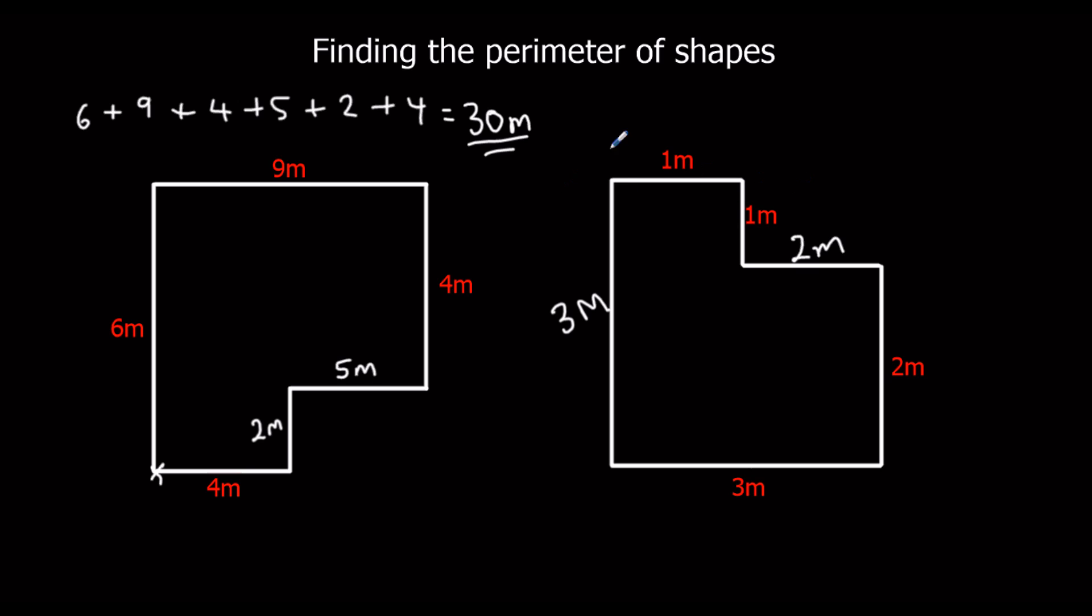Now we've got every length, so we just have to add them up. So I'm going to start there and go around the edge. So it's 1 plus 1 plus 2 plus 2 plus 2 plus 3 plus 3, and that gets me back. 1, 1, 2, 2, 3, 3.